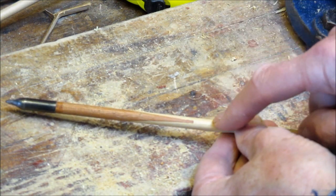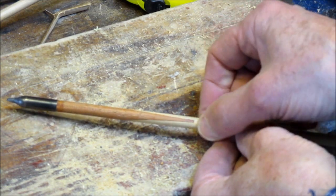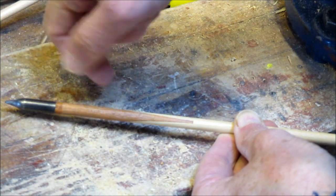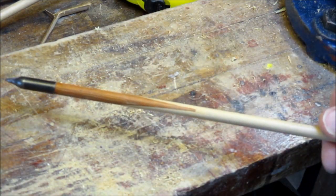Cut a bit of a V in the parent shaft. Bind it with some thread to stop it splitting. Sand a V onto your hardwood tip. Push them together, glue them, bind them, leave them overnight.